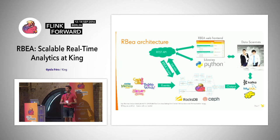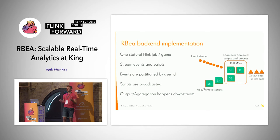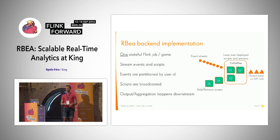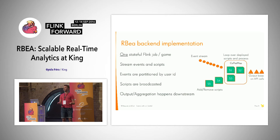Let's look at the backend in more detail. At its core, there is a CoFlatMap operator. On one input, it receives the events and executes all the scripts already deployed. On the other input, it receives new script deployments. These are received as strings, and we compile them with the Groovy compiler inside the CoFlatMap, and add them to a list of currently deployed scripts.